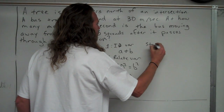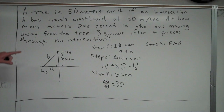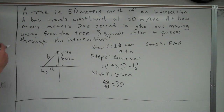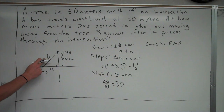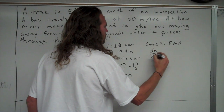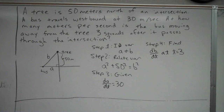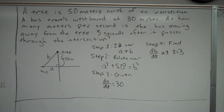We also need to figure out what we want to find. The problem asks: at how many meters per second is the bus moving away from the tree? The distance between the bus and the tree is B, so we want to find dB/dt. Specifically, we want it at t equals 3 — three seconds after the bus passes through the intersection, where t equals 0 is the moment it hits the intersection.